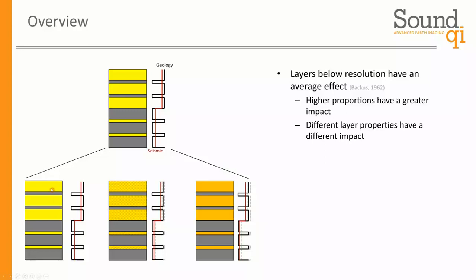Not only the proportion is important, but also the properties of those layers. If we're inserting high porosity sand into a shale versus a low porosity sand into a shale, that's going to have a different effect on how much we're seeing in that shift. So the second thing we're going to look at is not only the proportions, but the properties of those inserted layers — can we interpret both of those from our model?